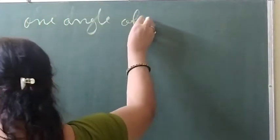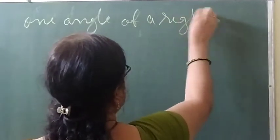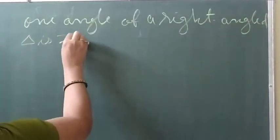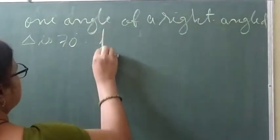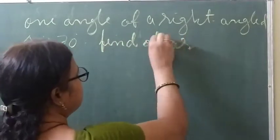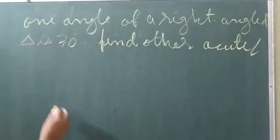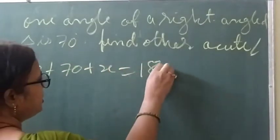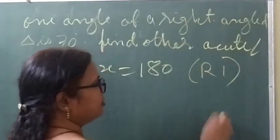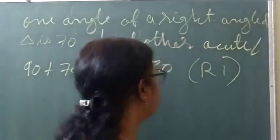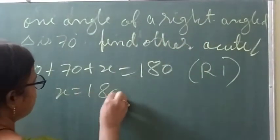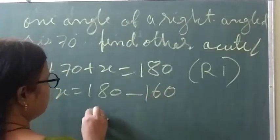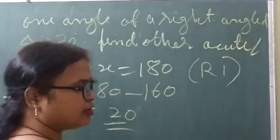One angle of a right-angled triangle is 70 degrees. Find the other acute angle. So 90 plus 70 plus x equals 180 — Reason 1. So x equals 180 minus 160, which is 20 degrees. The value of x is 20 degrees.